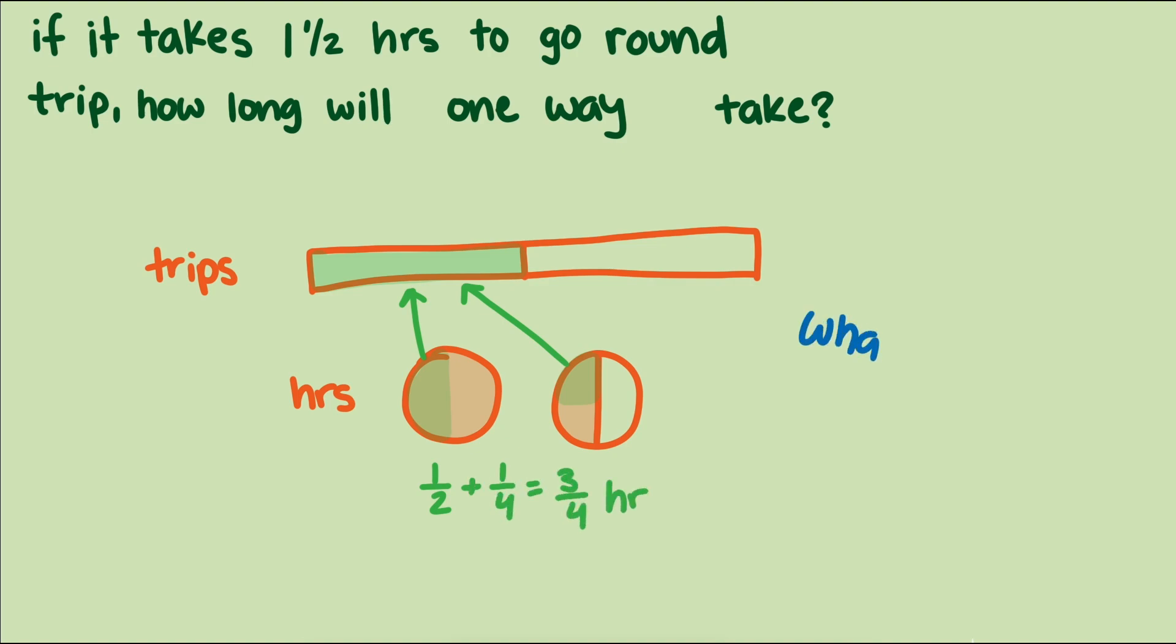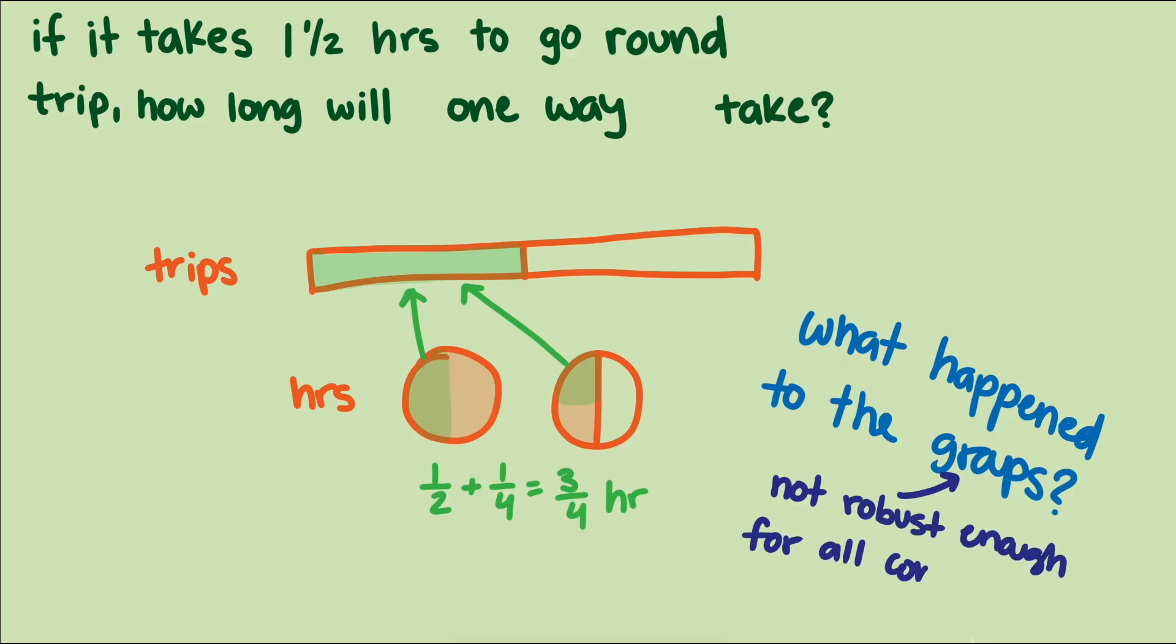You might be wondering why we aren't using the language of groups like we did earlier to describe the difference between quotative and partitive division. Group language is an easy way for students to first reason about division, but we have to generalize our understanding of groups to accommodate other contexts. The answer to a partitive division is not just how many in a group, but how many in one unit, or how many in one whole, or how many in one whole unit.